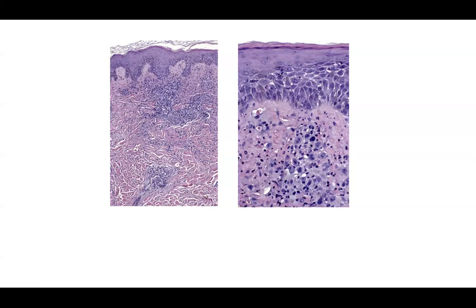Type A lymphomatoid papulosis has more of a Hodgkin's lymphoma appearance — Reed-Sternberg cells may be seen — but it's not Hodgkin's lymphoma. Clinically it's waxing and waning, which is how you know it's not something more serious.